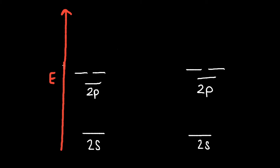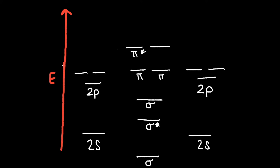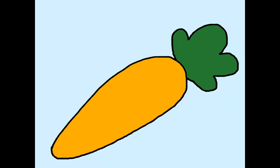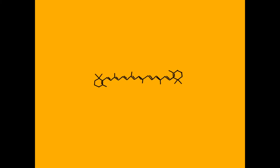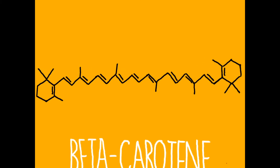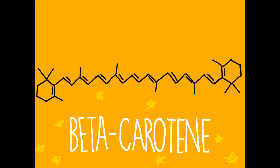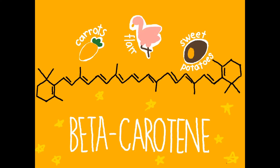Now we can construct our molecular orbital diagram. We know that in the second energy level, electrons come from the 2s and 2p atomic orbitals. We can then fill in our molecular orbitals from the last diagram. Let's apply everything we've just learned to this carrot, or more specifically, this beta-carotene molecule. Beta-carotene is an orange-colored compound that gives color to carrots, sweet potatoes, and flamingo feathers.